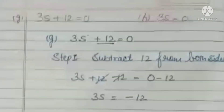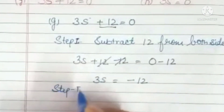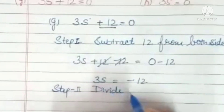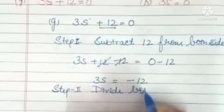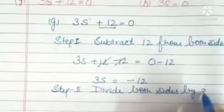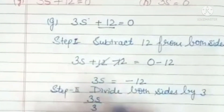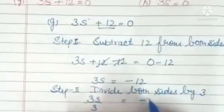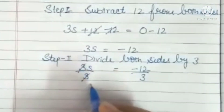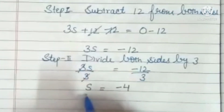Next step is divide both sides by 3. So 3s upon 3 equals negative 12 upon 3. This 3 and 3 is cancelled. So s is equal to minus 4.